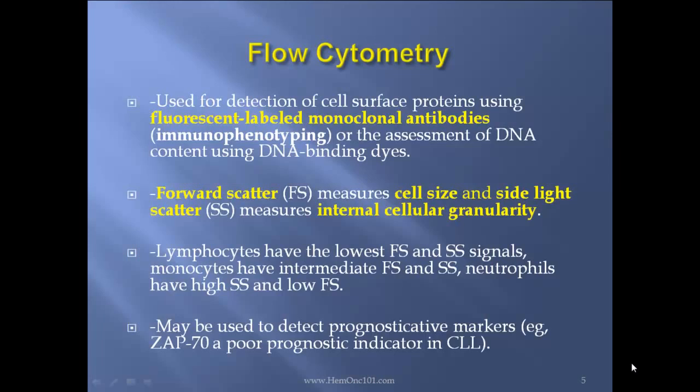Neutrophils have high side scatter and low forward scatter. This may be used, for instance, to detect prognostic markers such as CD70 in CLL.